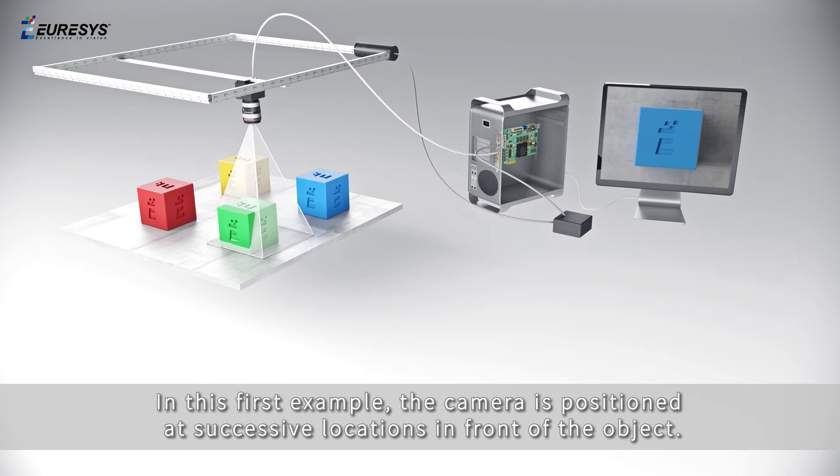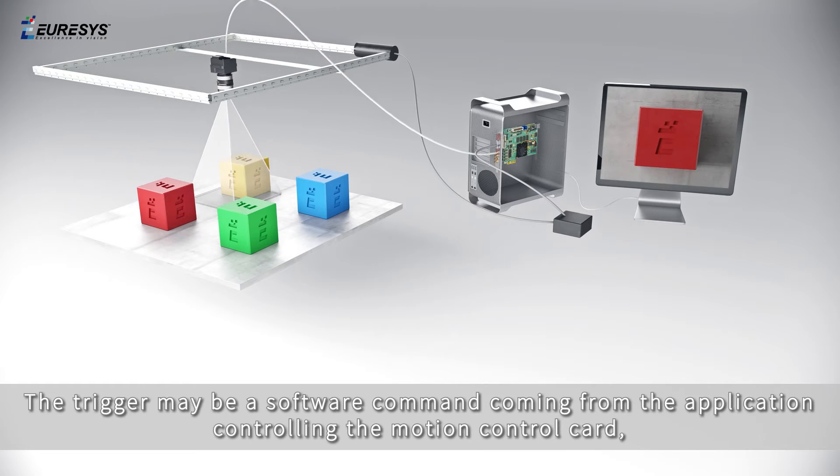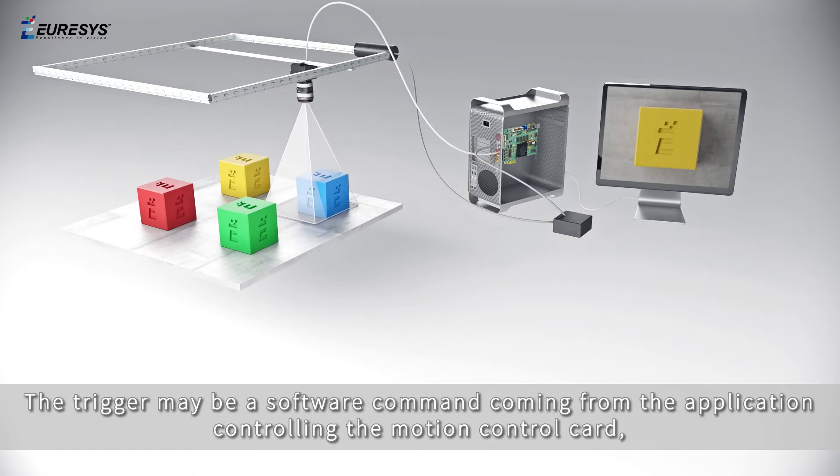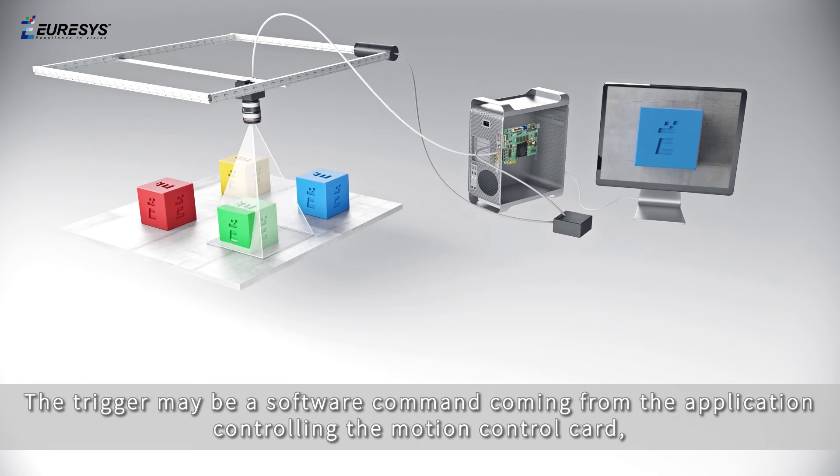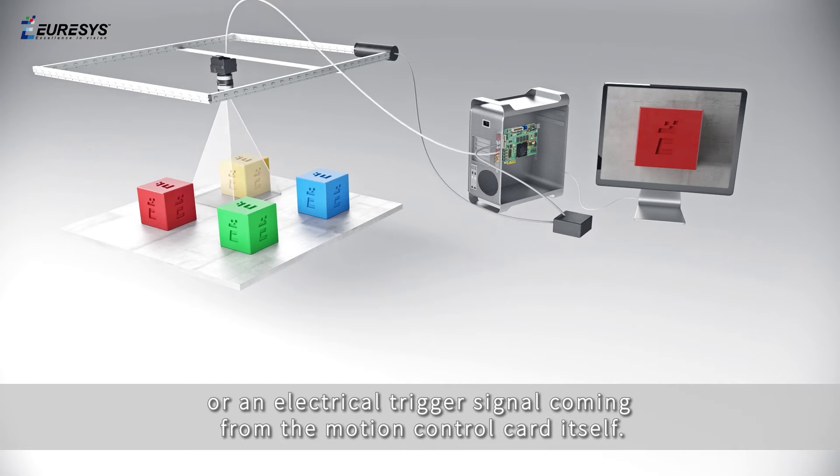In this first example, the camera is positioned at successive locations in front of the object. The trigger may be a software command coming from the application controlling the motion control card or an electrical trigger signal coming from the motion control card itself.